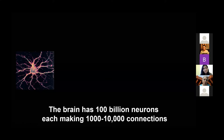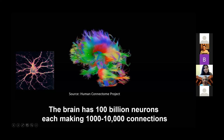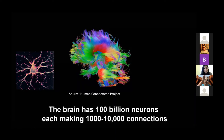Each neuron is thought to make between 1,000 and 10,000 connections with other neurons. These are all large tracts of axons — large wires that are connecting. This is not a model system you can study, nor will somebody kindly give me their brain to study. So we use the model system of the mouse, in which we can study how sensory circuitry is wired. Here is a section of a mouse brain where the sensory pathway is fluorescent green.